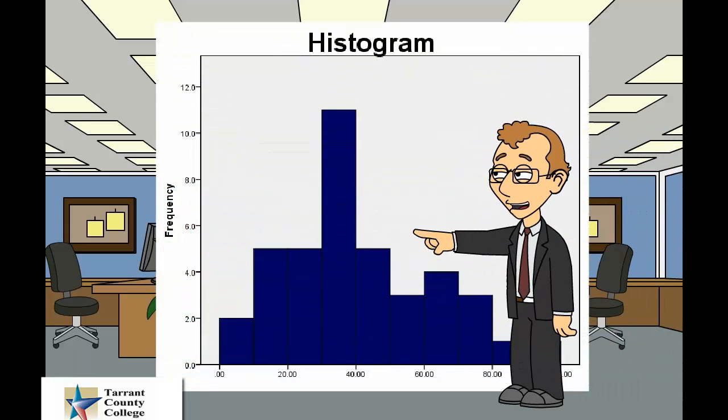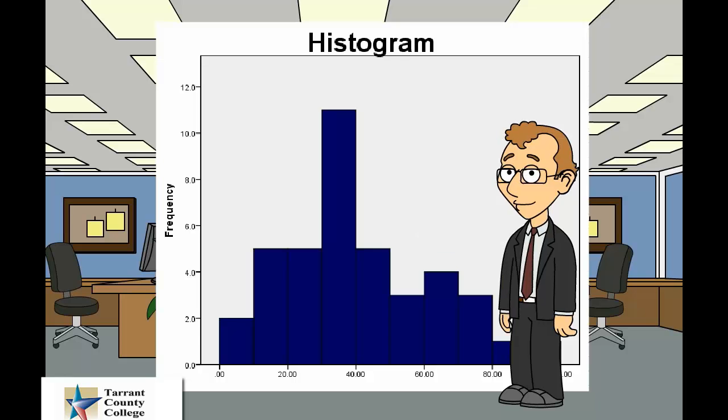A histogram is used to illustrate the distribution of a quantitative variable. It is the best visual representation of the shape of the distribution.